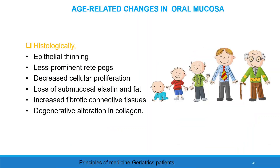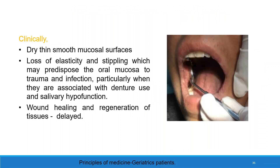Age-related changes in oral mucosa. As age progresses, epithelial thinning occurs, rete pegs become less prominent, cellular proliferation decreases, and loss of submucosal elastin and fat occurs. There is increased fibrotic connective tissue, degenerative ulcerations, and alterations in collagen. Clinically, a dry, thin, soft mucosal surface can be seen. Loss of elasticity may predispose the oral mucosa to trauma and infection, particularly when associated with denture use. Wound healing and tissue regeneration are delayed.